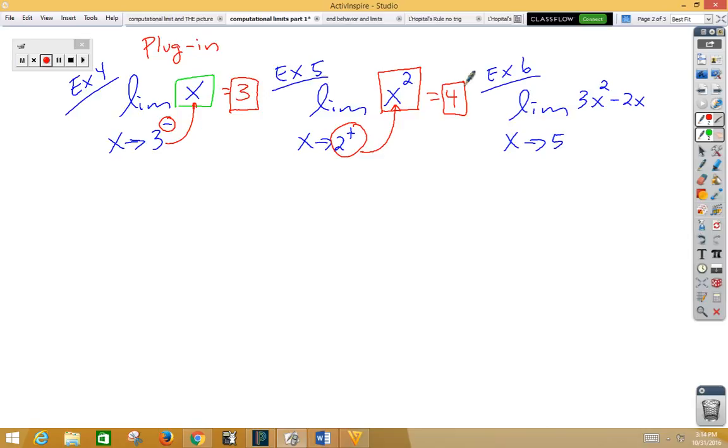In example six, our function is now a little more complex, three x squared minus two x. We're going to plug in our five into both x's. So three times five squared minus two times five, that would be three times twenty-five minus ten, or seventy-five minus ten. So our limit would be sixty-five.